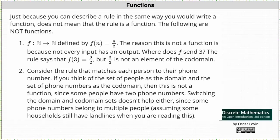Consider the rule that matches each person to their phone number. If you think of the set of people as the domain and the set of phone numbers as the codomain, this is not a function since some people have two phone numbers. Remember, every input must have exactly one output. If someone has two phone numbers — for example, one personal and one for business — the input would have two outputs, making it not a function.